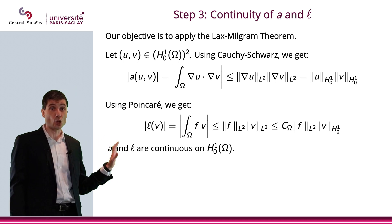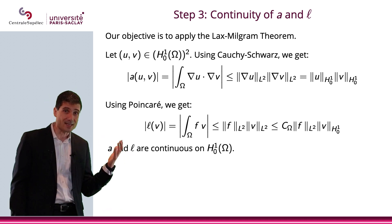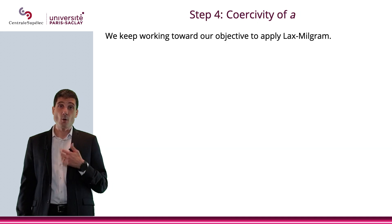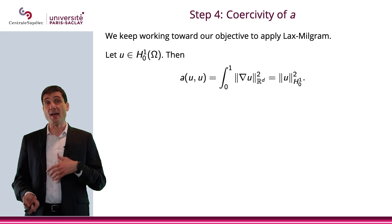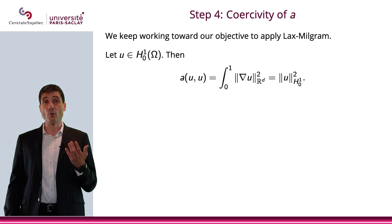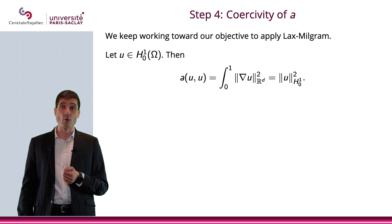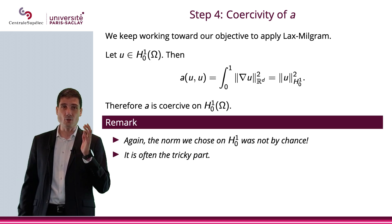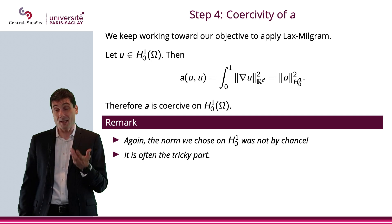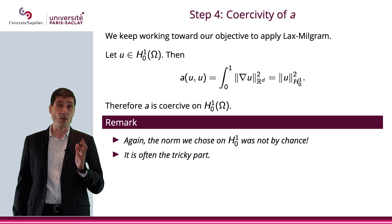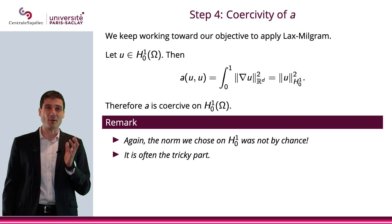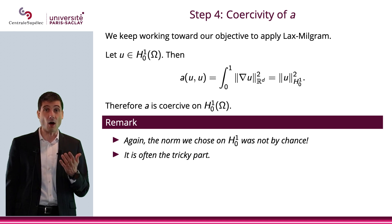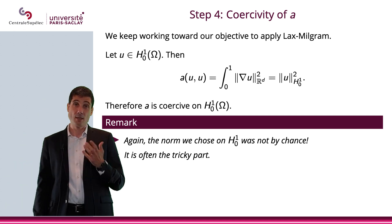I would like to stress that the choice of H^1_0 is not by chance. We basically chose H^1_0 for that reason. Coercivity of a works again the same way. When I do a(u,u), that's going to be the norm of u in H^1_0 squared, and that will give me coercivity of my function a. The norm we chose on H^1_0, the Hilbert space we chose, is working because we chose it so it works. We could have chosen other Hilbert spaces, but this one makes it work. That's often the tricky part: finding the right Hilbert space. Step 4 is completed.